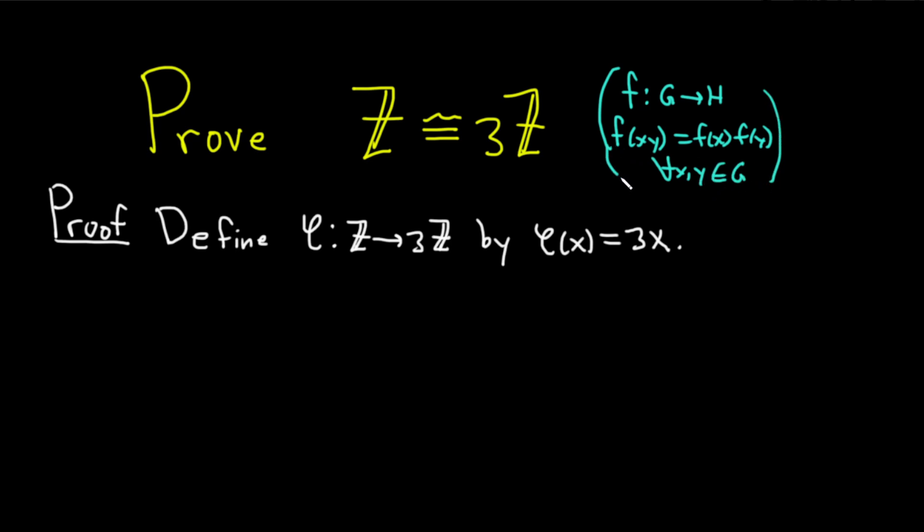In our case, g is Z and h is 3Z. And f is phi. I wrote it with multiplication on purpose because now it's going to be different. Now it's going to be addition.